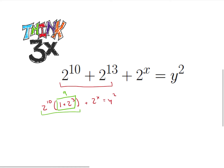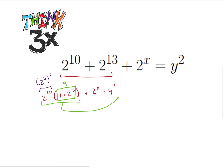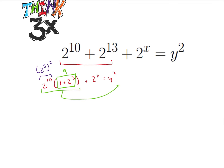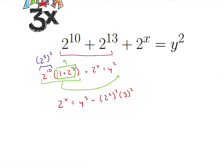I'm going to move this over and subtract it from both sides. I also notice that 2 to the 10th is 2 to the 5th squared, so I'm going to rewrite this using 2 to the 5th squared and 3 squared. Rearranging, I write this as 2 to the x equals y squared minus (2 to the 5th)² times 3².